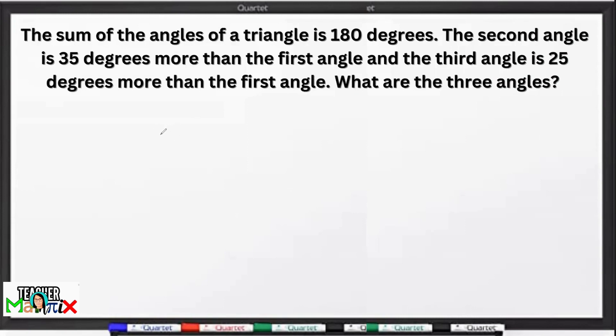The sum of the angles of a triangle is 180 degrees. The second angle is 35 degrees more than the first angle, and the third angle is 25 degrees more than the first angle. What are the three angles?